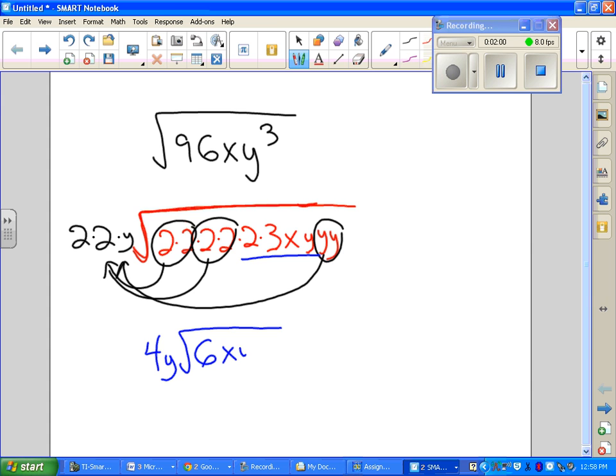I have an x and I have a y. So when you're asked to simplify the radical √(96xy³), your answer will be 4y√(6xy).